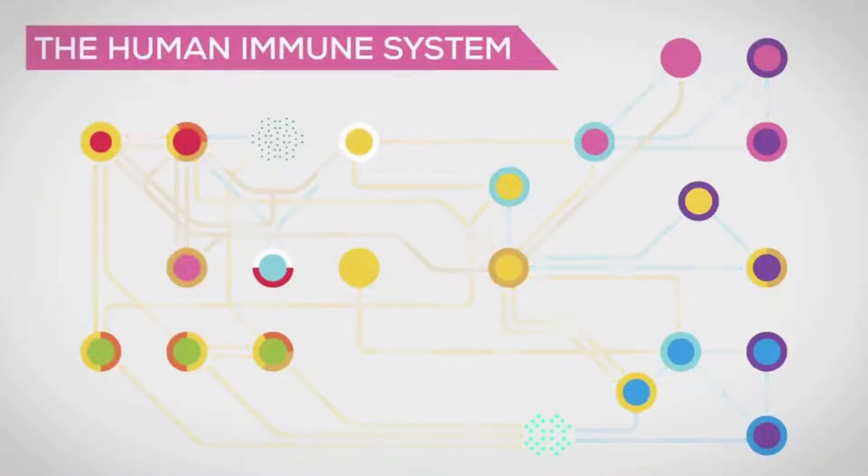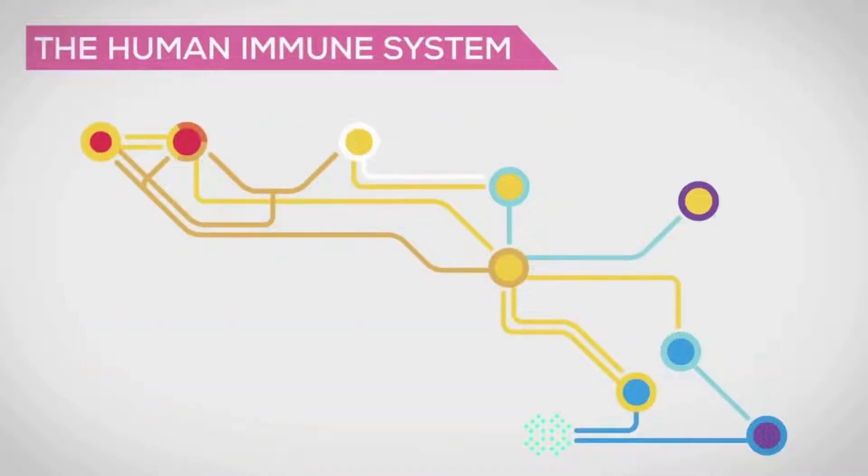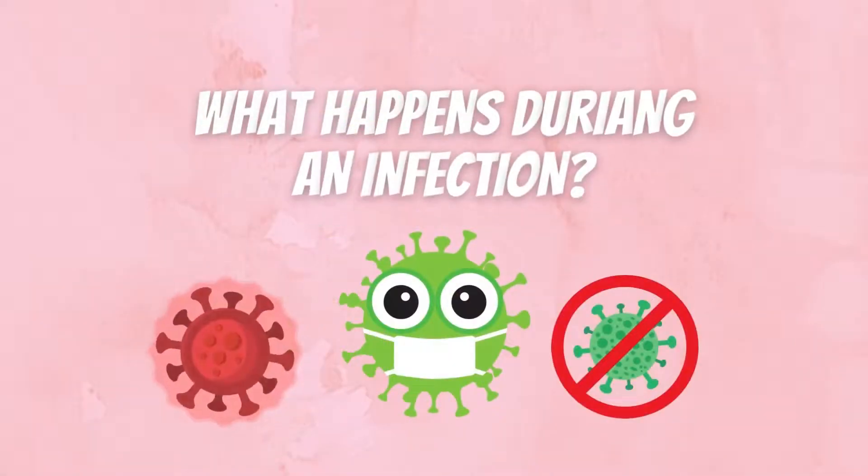Now the immune system looks like this. Now the interactions. Isn't this complexity just awesome? For this video, we will only talk about these cells and ignore the rest.